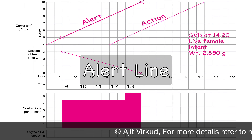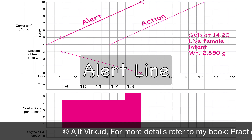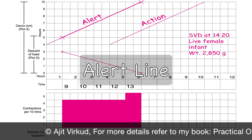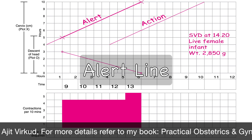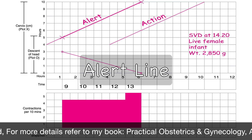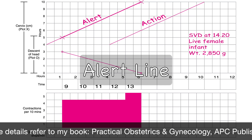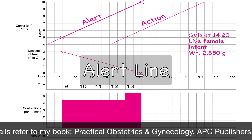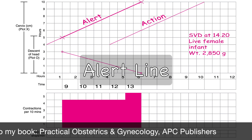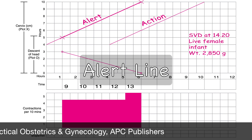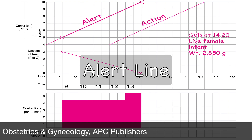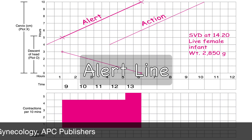If the plot moves to the right of the alert line, labour may be prolonged. In this situation, if facilities for assessment of the cause and its prompt management are not available, the woman should be transferred to a tertiary care facility. The alert line is also known as the health facility line because, as long as labour progress remains inside this line, women can be kept in the primary care centre or hospital.